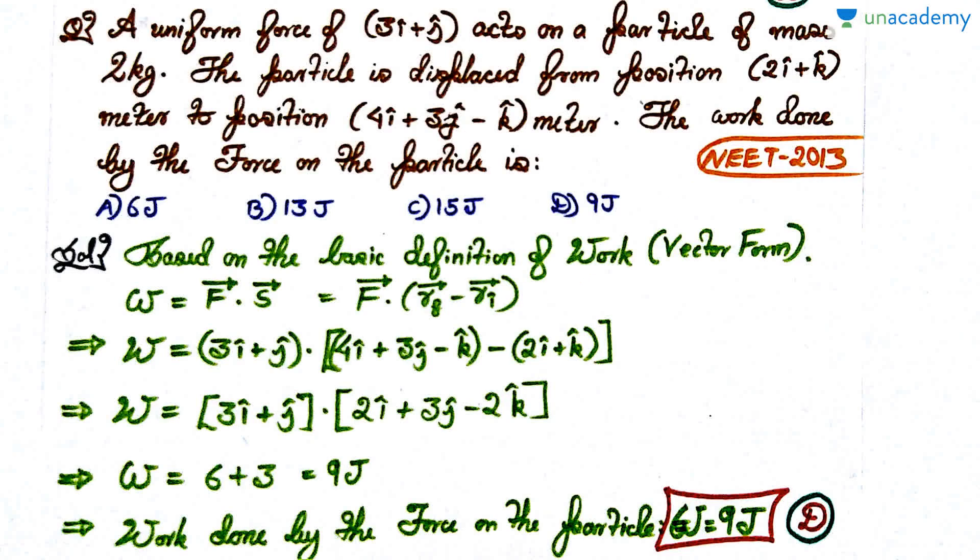This is a very straightforward, very easy question. A uniform force of 3î + ĵ acts on a particle of mass 2 kg. The particle is displaced from position 2î + k̂ meters to position 4î + 3ĵ - k̂ meters. The work done by the force on the particle is: these are the options. Pause the video, attempt the question, and then we'll discuss the solution.